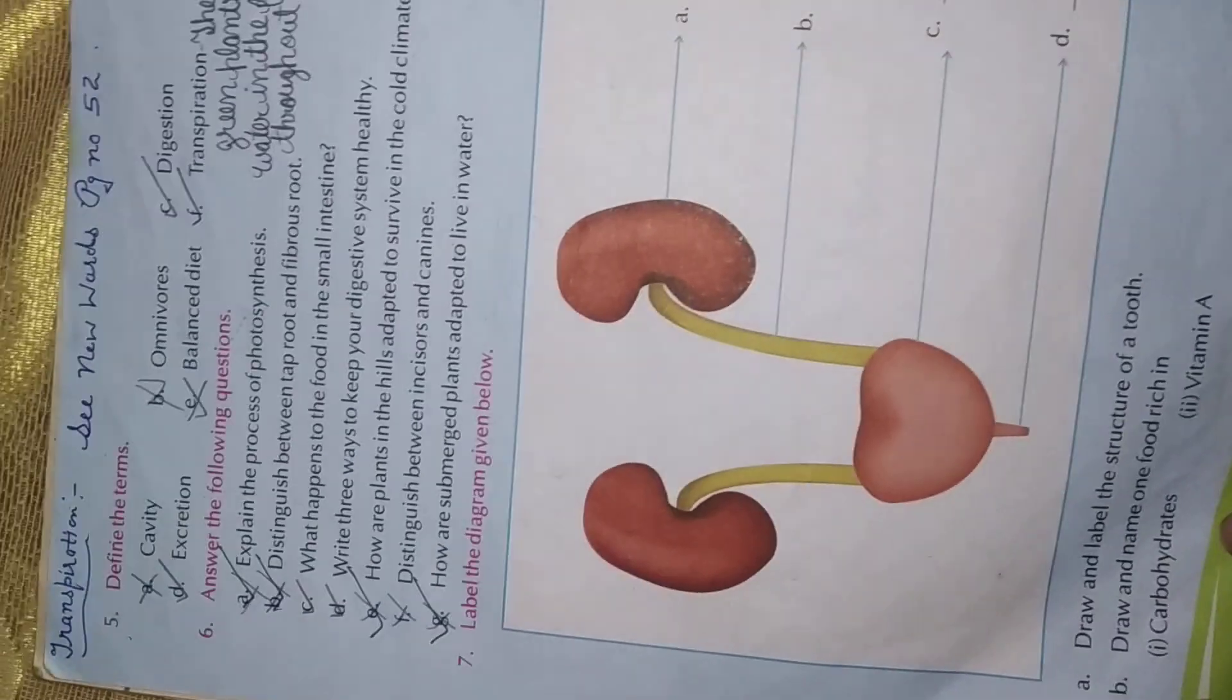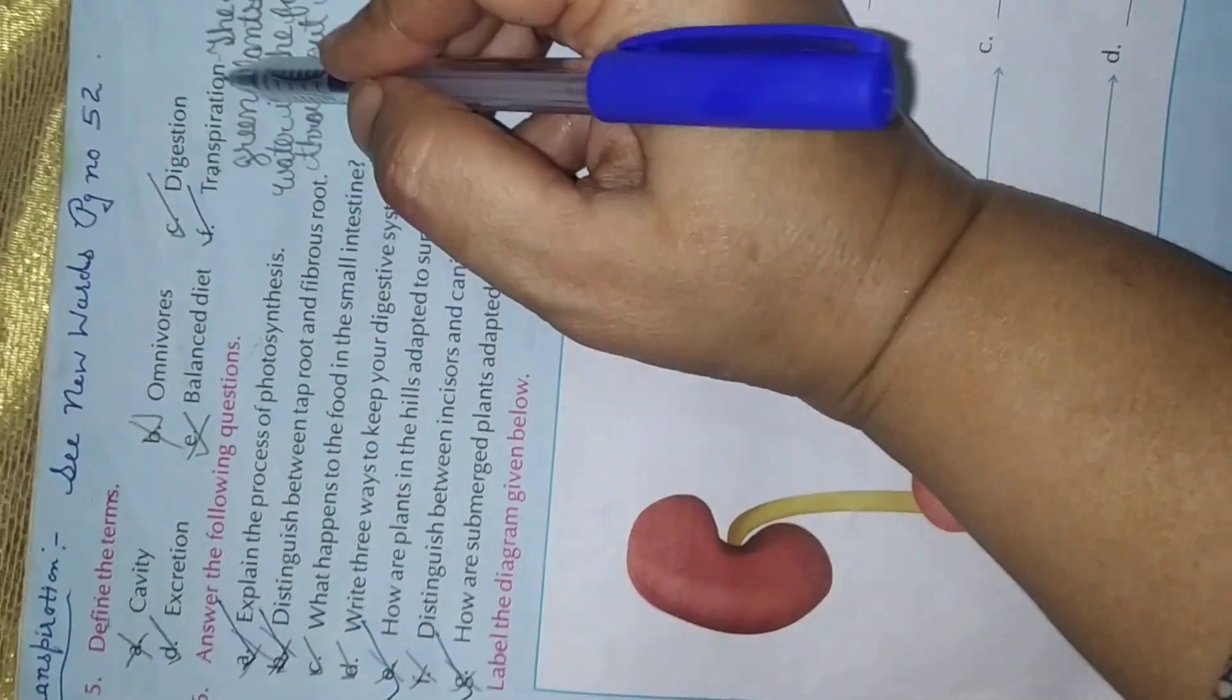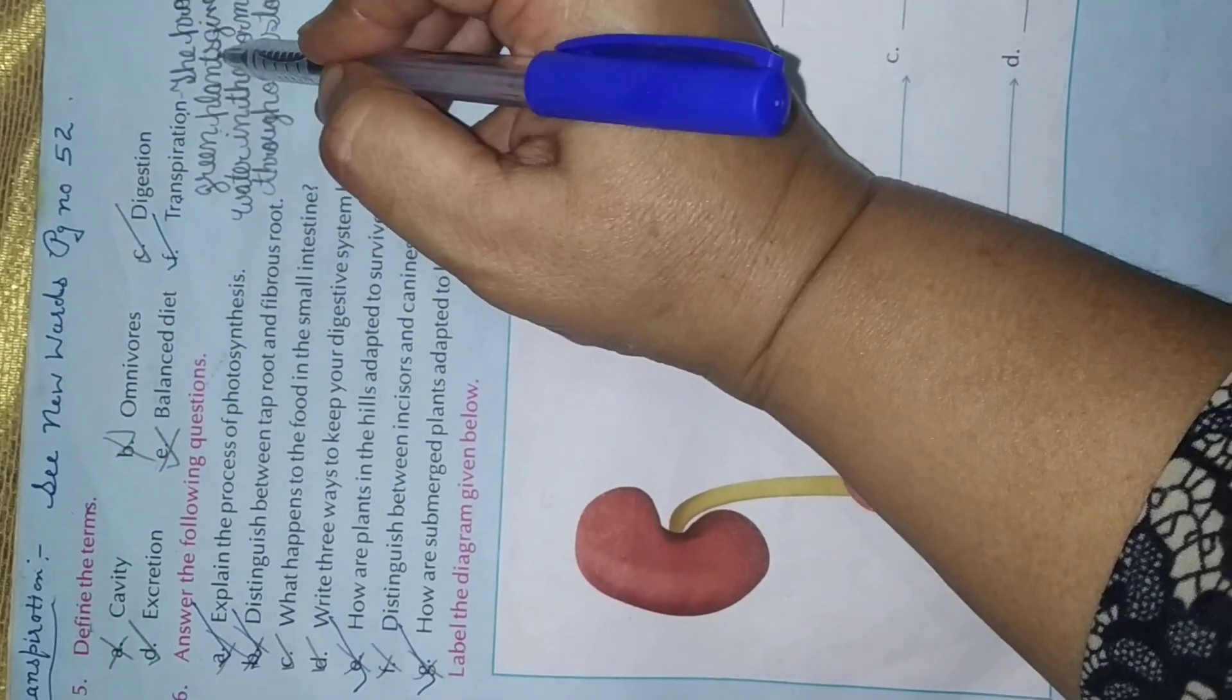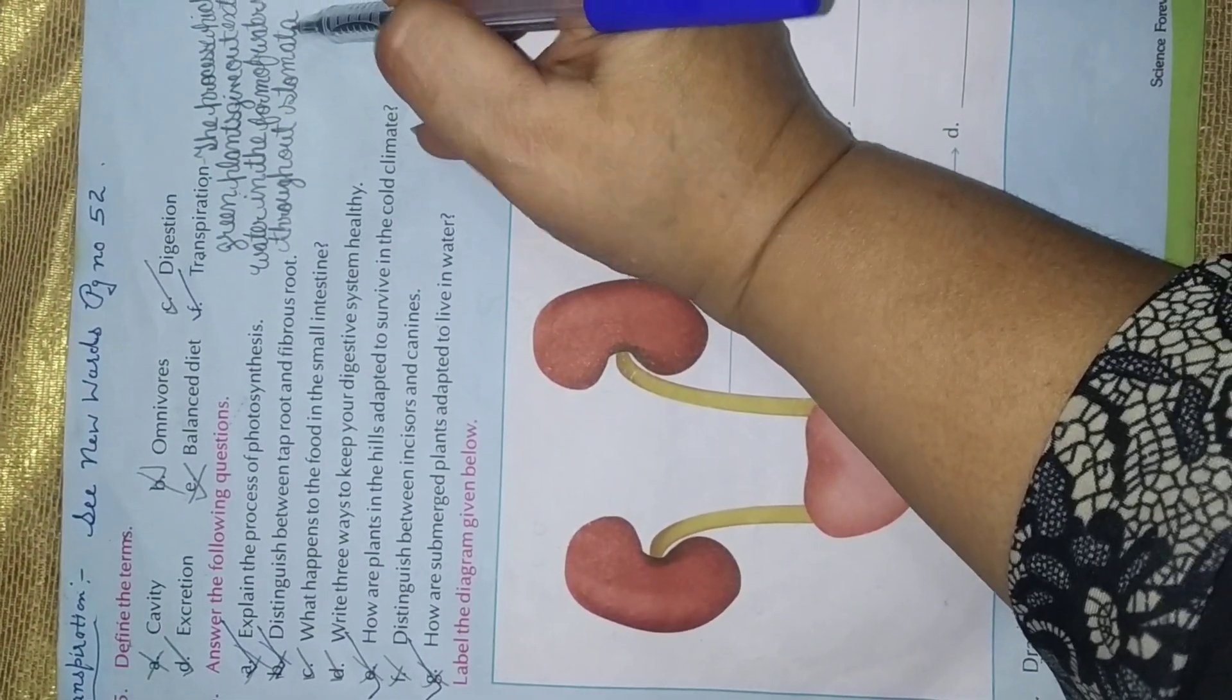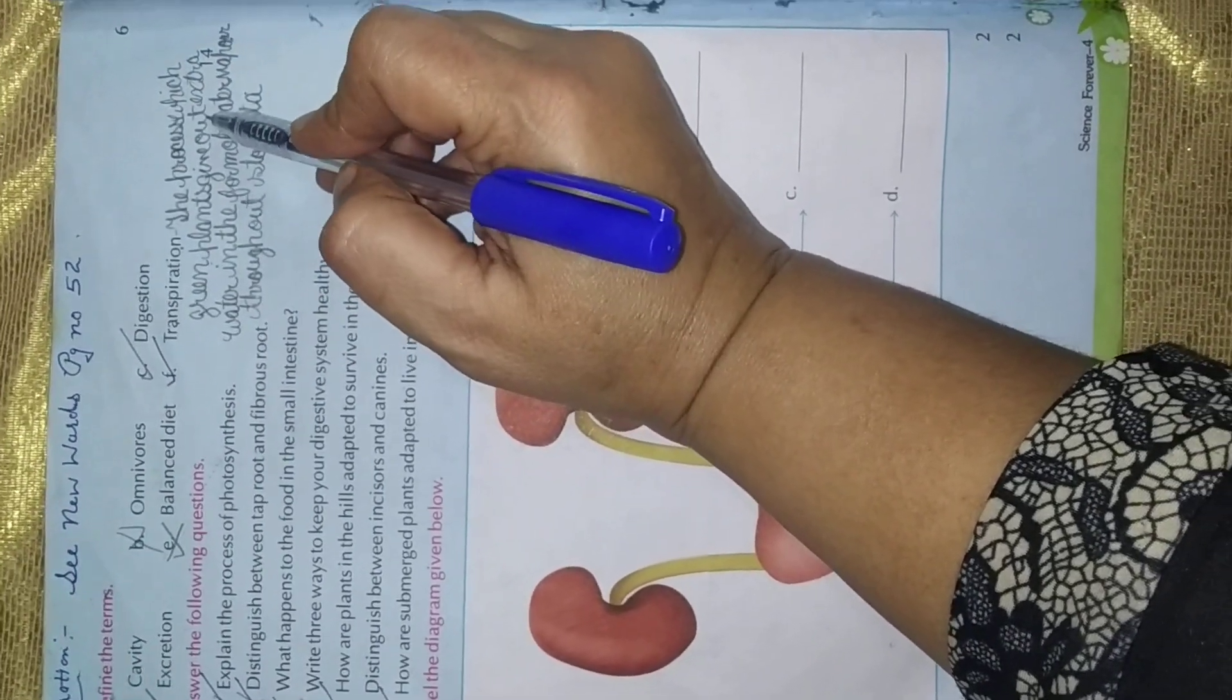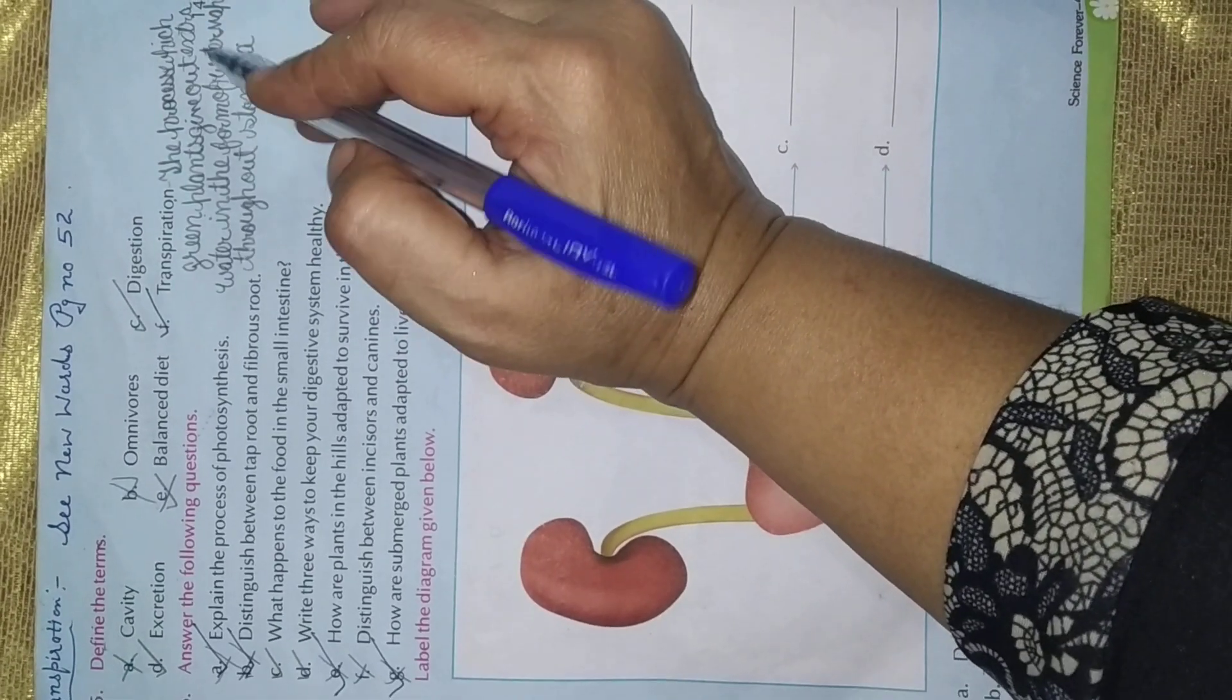Next question number 5. Define the terms. You know students, what is transpiration? The process by which green plants give out extra water in the form of water vapor through the stomata. We have done already transpiration. Page number 52. We have done.